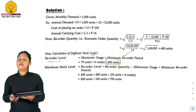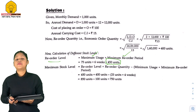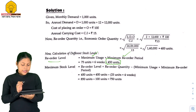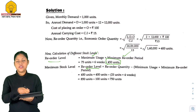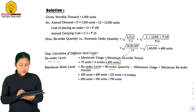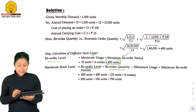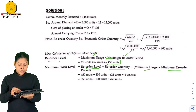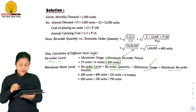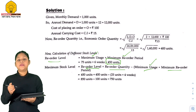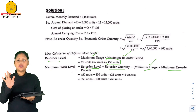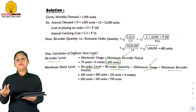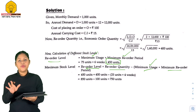Now let's see the Maximum Stock Level formula. Maximum Stock Level equals Reorder Level plus Reorder Quantity minus minimum usage into minimum reorder period. Minimum usage is 25 units and the minimum reorder period is 4 weeks.